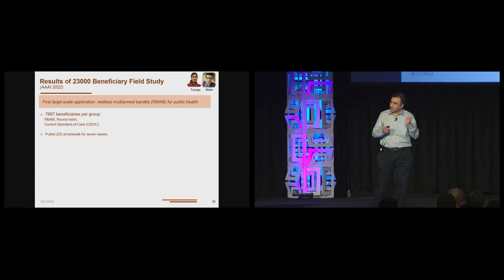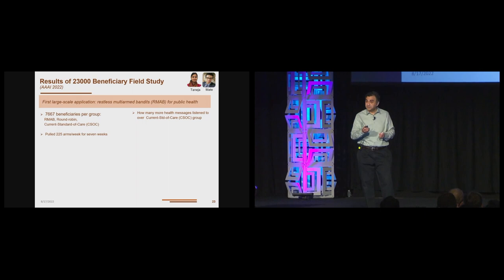So we did this study of 23,000 beneficiaries. This is the first large-scale application of restless bandits for public health. We divided the group into three groups, 7,667 per group - the restless bandit group, the RMAP group, round-robin group, and the current standard of care group. In each of these groups, we pulled 225 arms. In the RMAP group, the beneficiaries were chosen to be those with the top Whittle index. In the round-robin group, we call the first 225, then the next 225. And the current standard of care, no calls are going out.